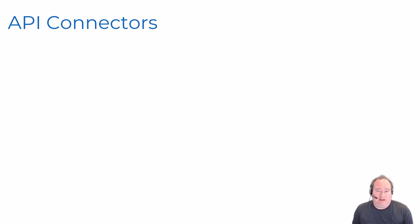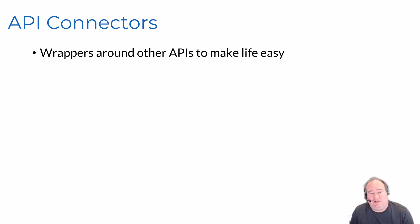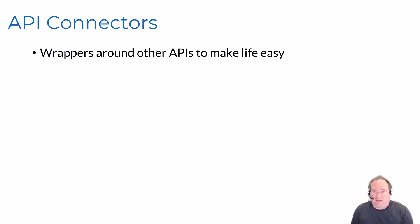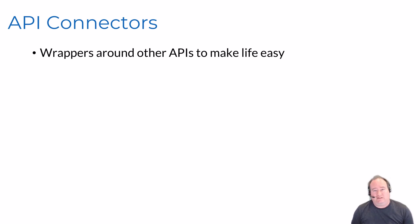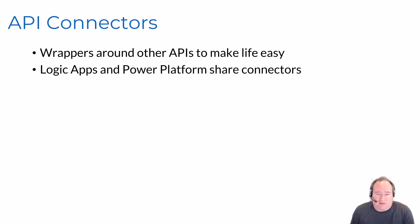Microsoft has implemented their connectors as what they call API connectors. These API connectors are essentially a wrapper around other APIs. For example, they've wrapped ServiceNow connectors around their own API connector facade to give you a consistent interface for interacting from your Azure components to your third parties. Logic apps and Power Platform share the same connectors for the most part - the same ecosystem of connectors is available for both.